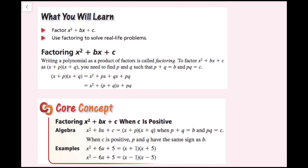The reason that works is because if you multiply x plus p times the quantity x plus q, you get x squared plus px plus qx plus pq. And then if you factor out a pq from your x terms, you get the quantity p plus q as the coefficient of x.